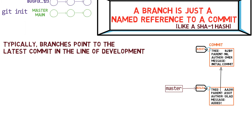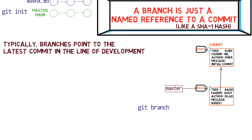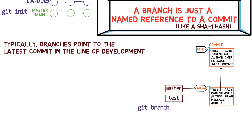To create another branch, we usually use the git branch command. By doing that, we actually create another pointer. So, if we create a branch called test by using git branch test, we're actually creating another pointer by the name of test that points to the same commit as the branch we're currently on.